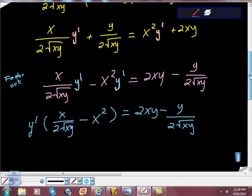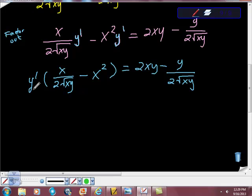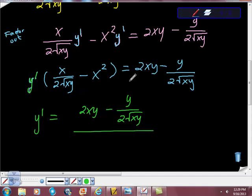And you might be going, what the hell's going on here? But we're almost done, actually. Remember, our goal is to get this piece by itself. I'm trying to get this piece by itself here. So all I'm going to do is divide both sides by this. So I'm going to get y prime is equal to 2xy minus y over 2 square roots of xy, right, all over this piece right here, which is x over 2 square roots of xy minus x squared.